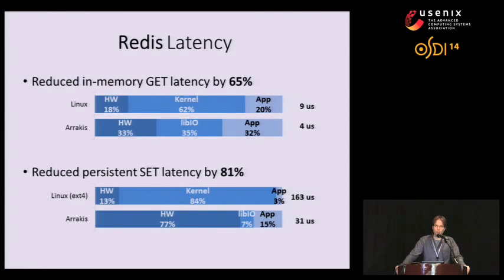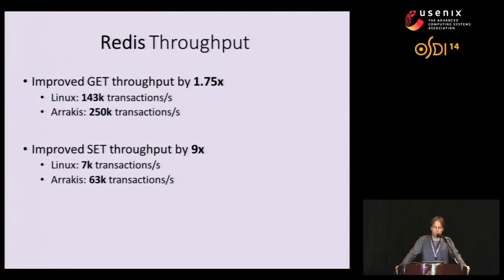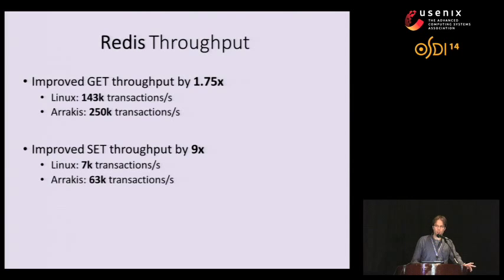These latency results translate into great throughput results as well. We improved the throughput of Redis GET operations by 1.75x versus Linux, and SET operations by a grand total of 9x versus Linux — great improvements in performance.